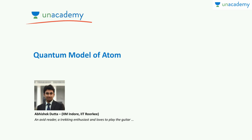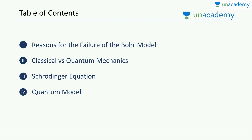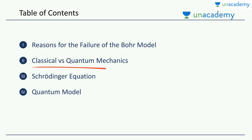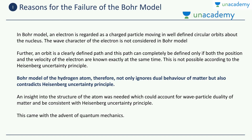Hello students! Welcome to ANACADEMY once again. This video is about the quantum model of an atom. I am Abhishek Datta. So let's begin. There are 4 topics of discussion. The first one will be the drawbacks of Bohr's model — we'll try to reason out why the Bohr model was not sufficient. Then we'll see the difference between classical and quantum mechanics. Thirdly, we'll learn about the Schrödinger equation, the most important equation in quantum mechanics. And finally, we'll learn about the quantum model of an atom.